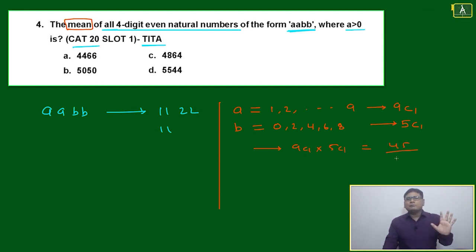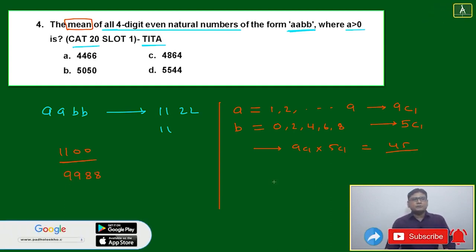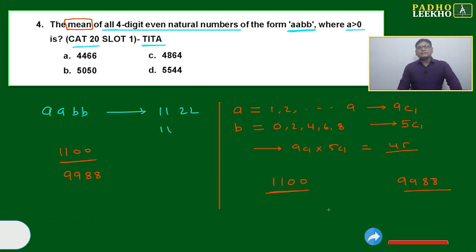We're not worried which 45 numbers. This is sure the lowest value of a is 1, lowest value of b is 0, and the lowest number in this series of 45 numbers will be 1100. What will be the highest number? Highest a is 9, highest b is 8, so 9988. If you have to find the mean, this is your first, this is your last. You just take the average - add and divide by two. This is the mean. You've not done any exercise because the question is not demanding that.